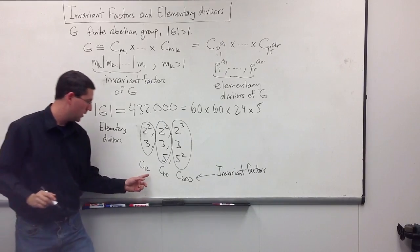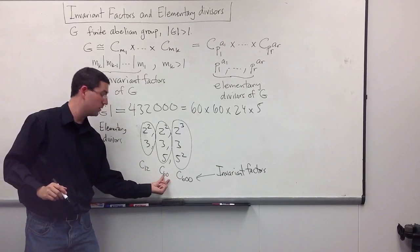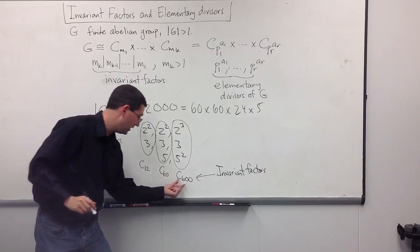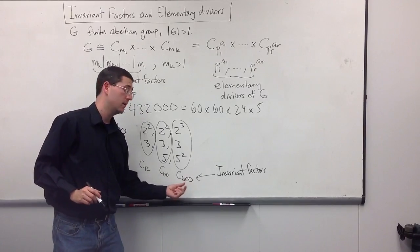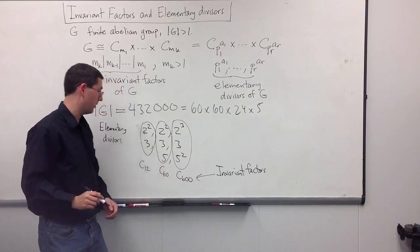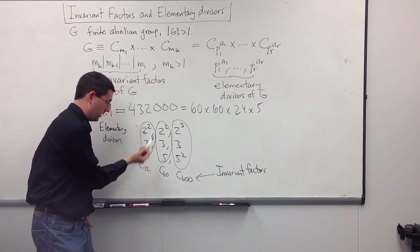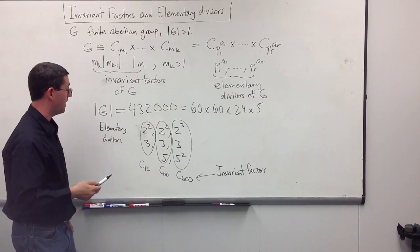And, just as a check, we should look at the divisibility. 12 does divide 60, and 60 does divide 600. So, it makes sense. These must be the invariant factors. And, we check 600 times 60 times 12 must be 432,000.